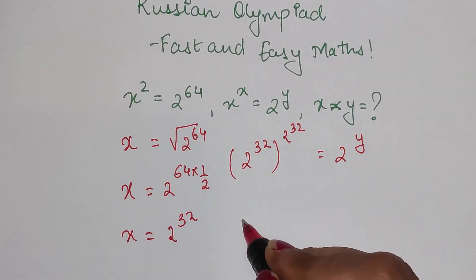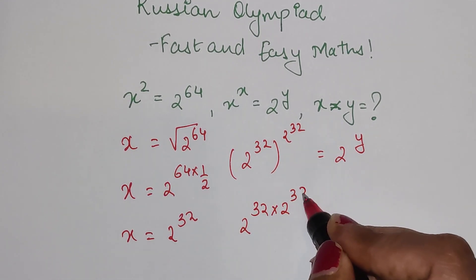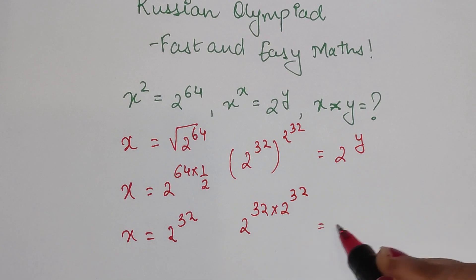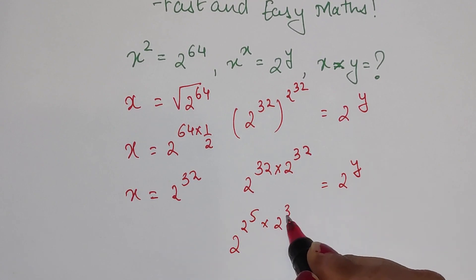I can write this as 2^32 times 2^32. This is still equal to 2^y. Here, 32 can be written as 2^5, so 2^5 × 2^32 = 2^y.